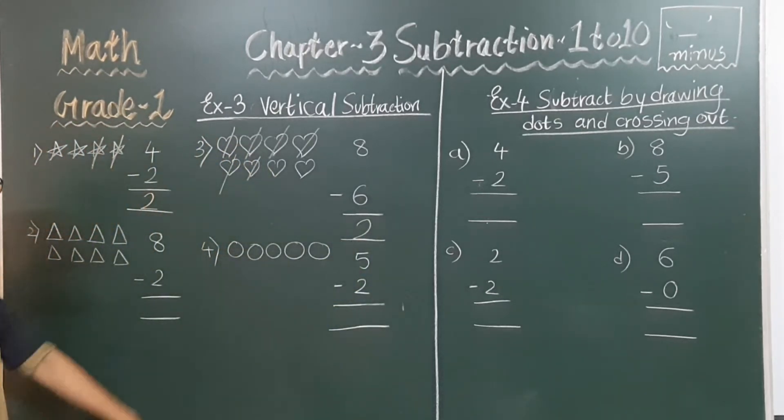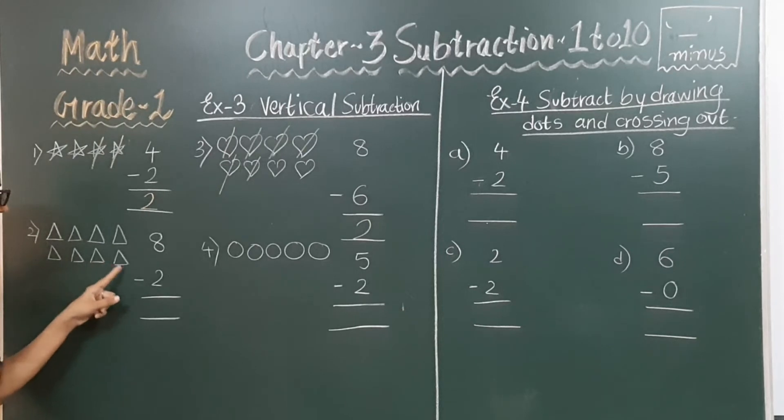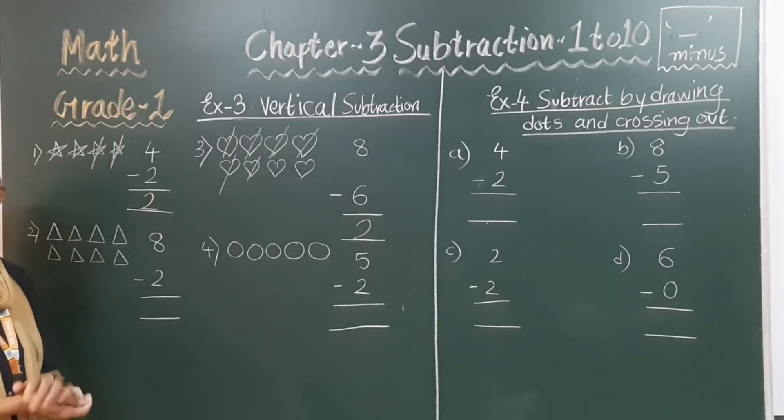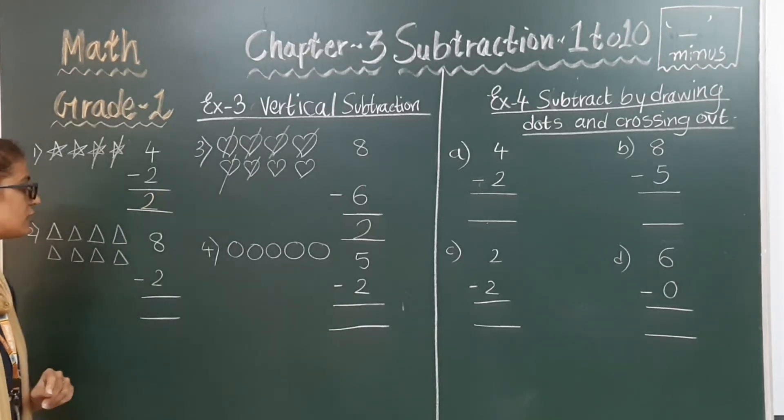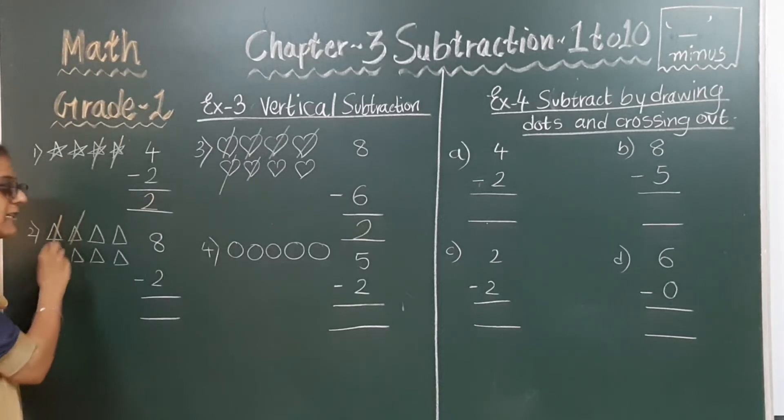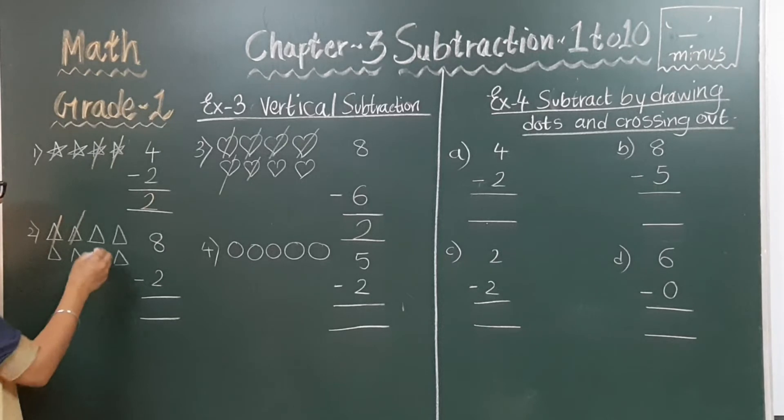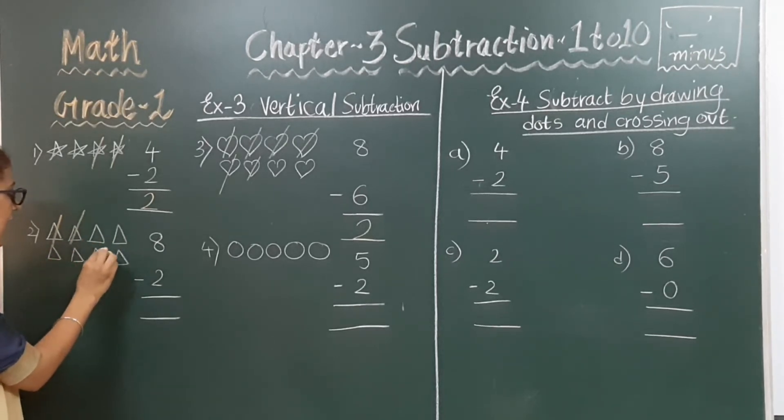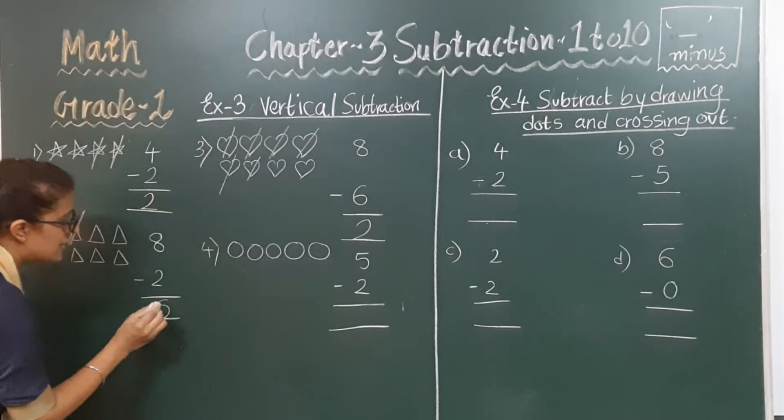Next. One, two, three, four, five, six, seven, eight. Total 8 triangles are there here. 8 minus 2. We have to minus 2 triangles from this 8 triangles. Let's do that. One and two. So now how much remaining? Let's count that. One, two, three, four, five and six. So 8 minus 2 is equals to 6.